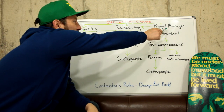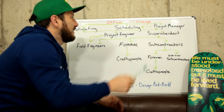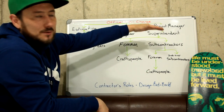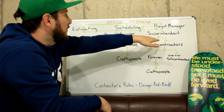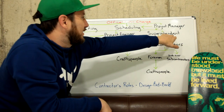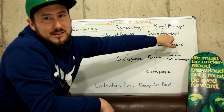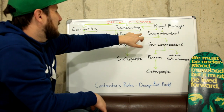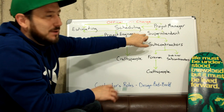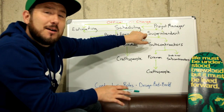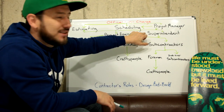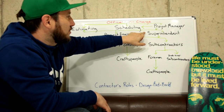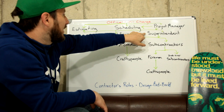The project manager is the next level, who will be in charge of the superintendent — the site superintendent. The superintendent will be on site all the time; this is the person in charge of the construction project.